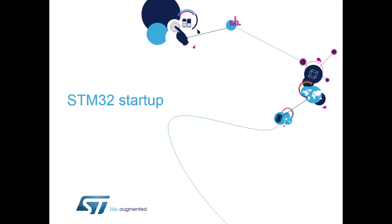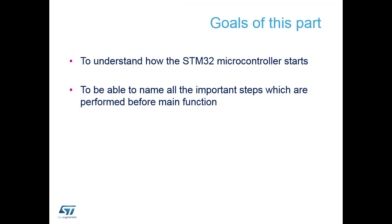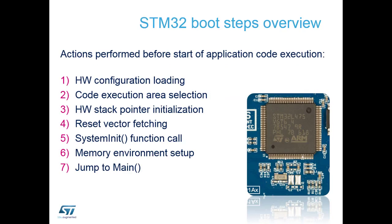We're now going to look at what happens when we start the device. The goal of this section is to understand what happens from when you release the reset line - when your power has hit a suitable level for the microcontroller to operate - all the way up to the first line of main.c. These are the seven steps that actually have to happen before we start executing any code that you have written.